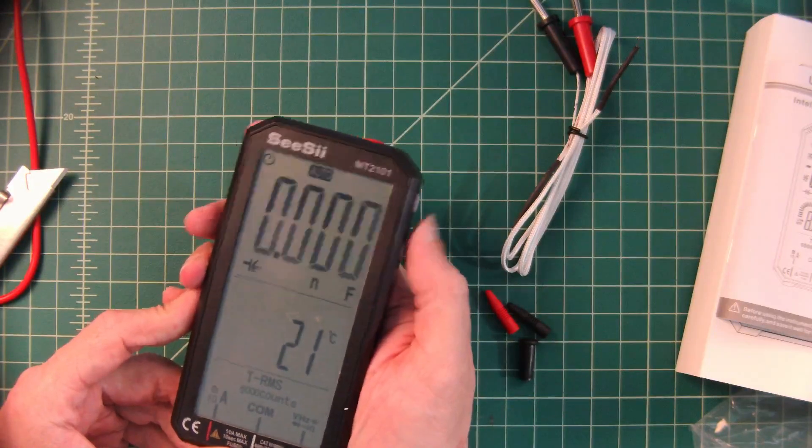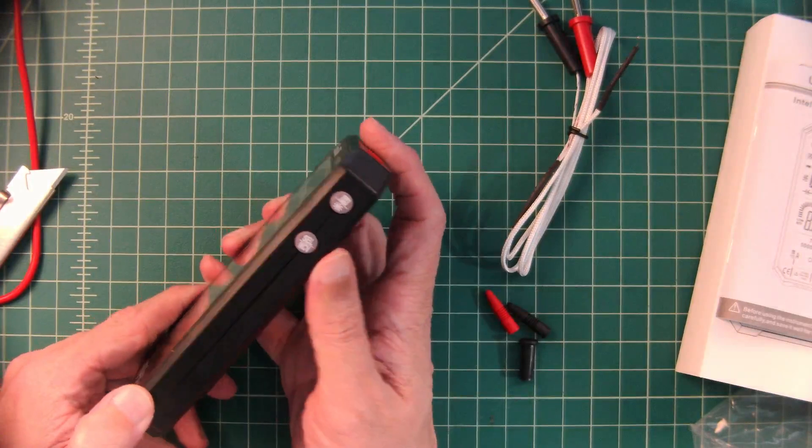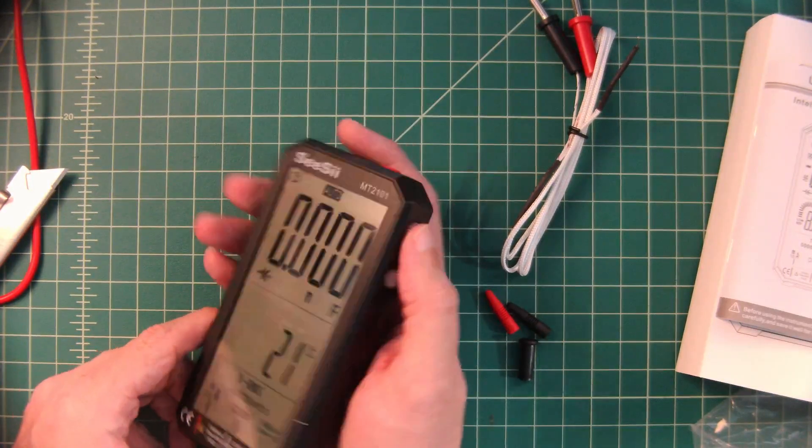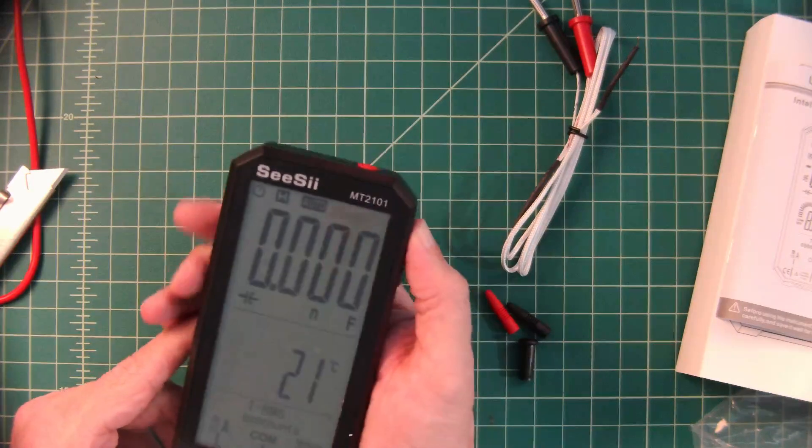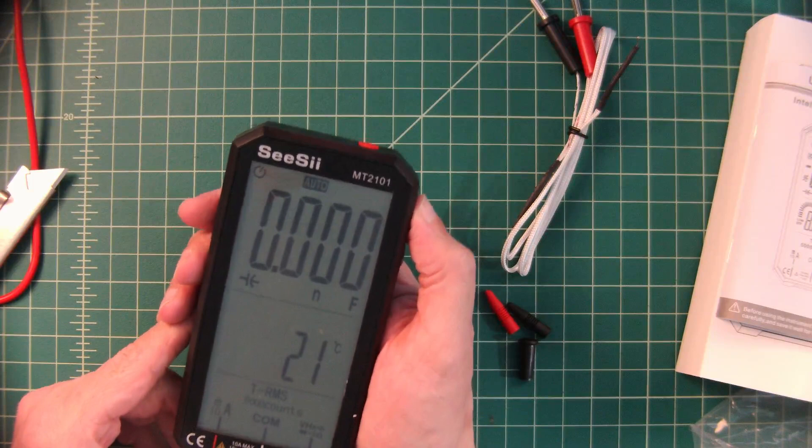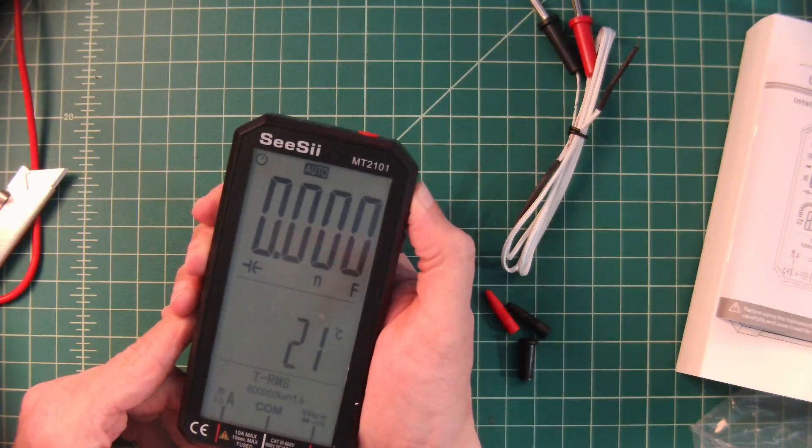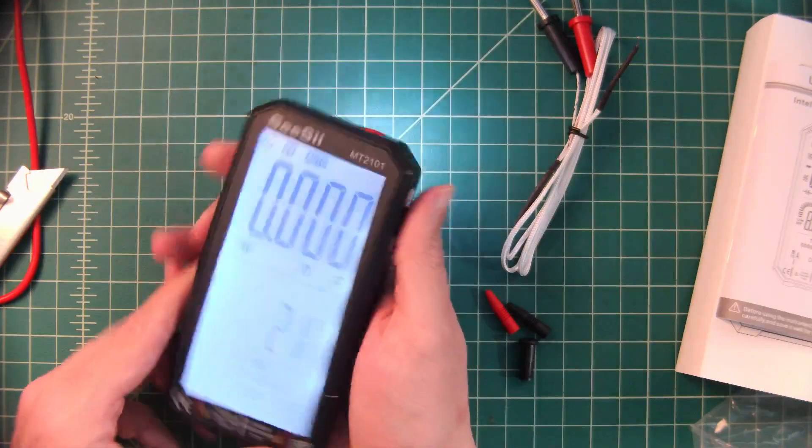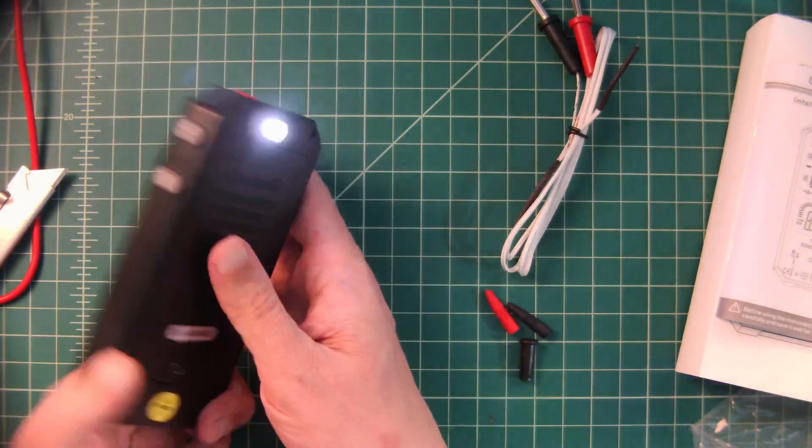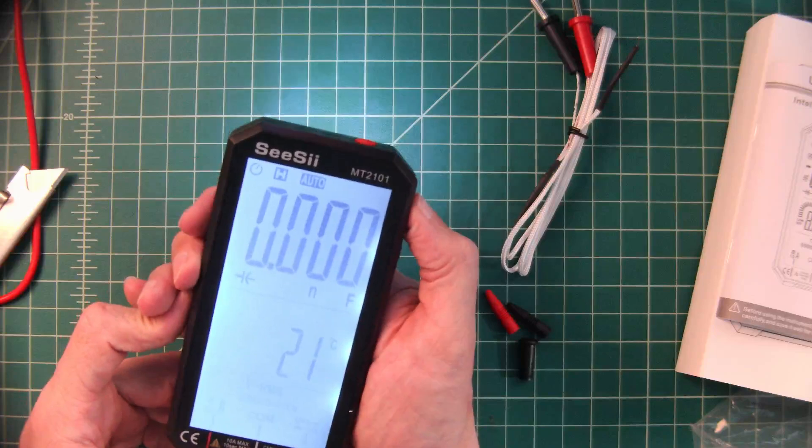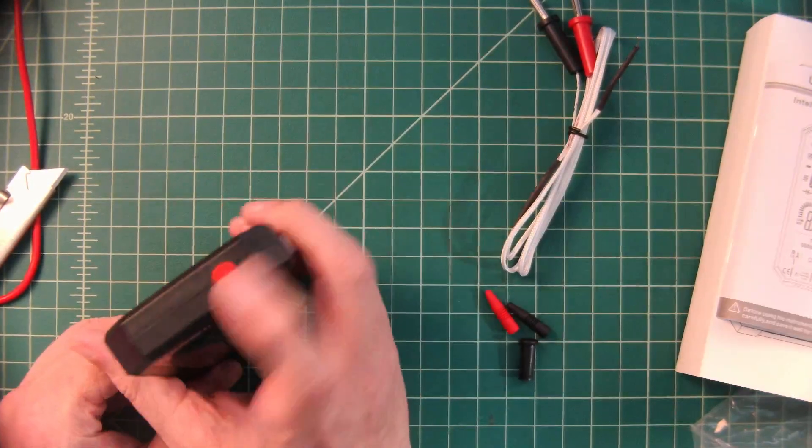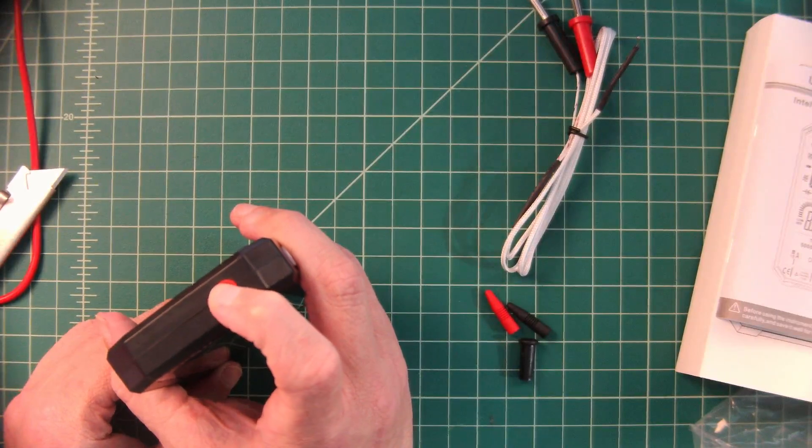This is a selection button that allows me to swap between modes. A long press will turn on the non-contact voltage. At the top I have a hold button as well as a backlight feature. The meter also has a flashlight on the front of it so if you're working in dark areas, which is pretty handy. The power button at the top. Let's do some tests and see what we have.